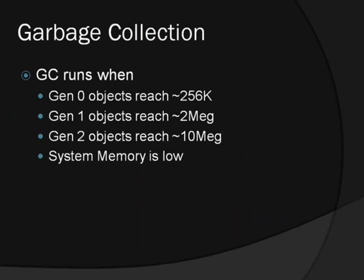The garbage collector runs for each generation based on a set of thresholds. Gen 0 collection occurs when the size of Gen 0 objects reaches approximately 256KB, Gen 1 at 2 megabytes, and Gen 2 at 10 megabytes.